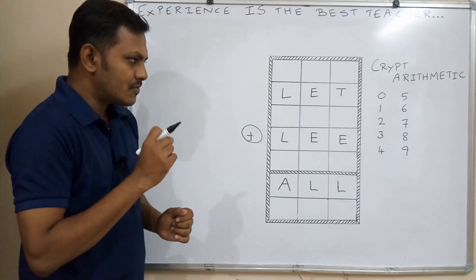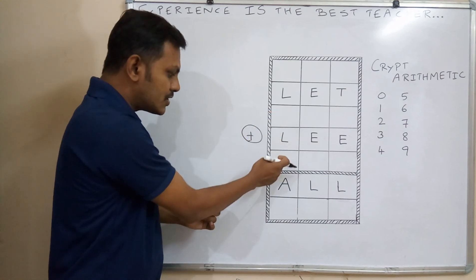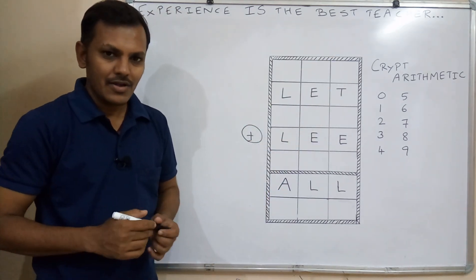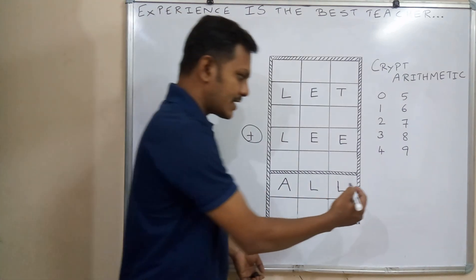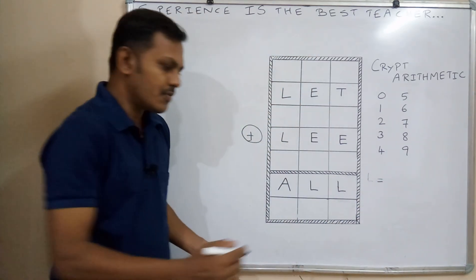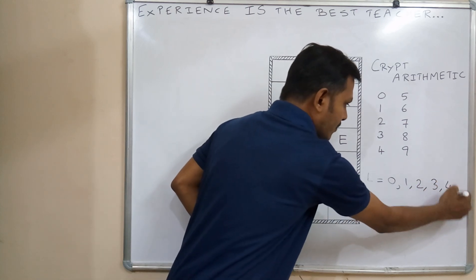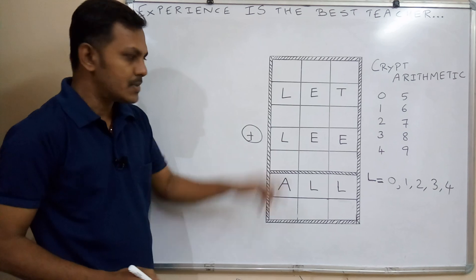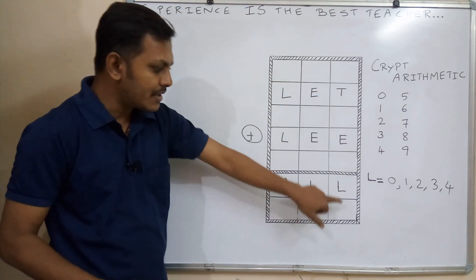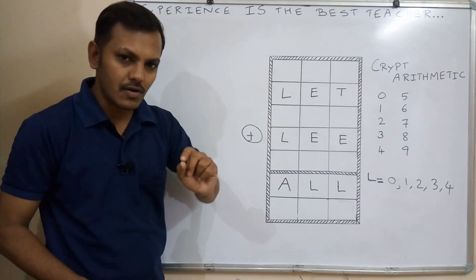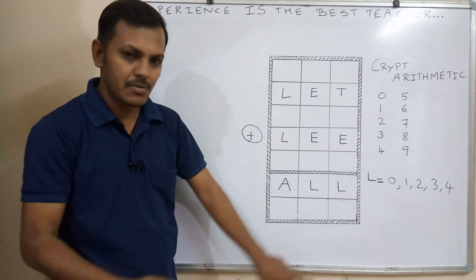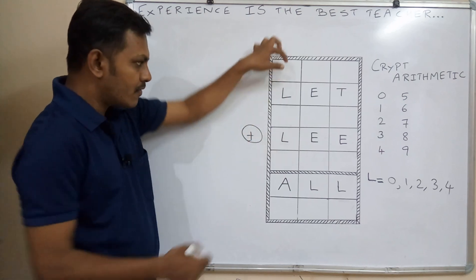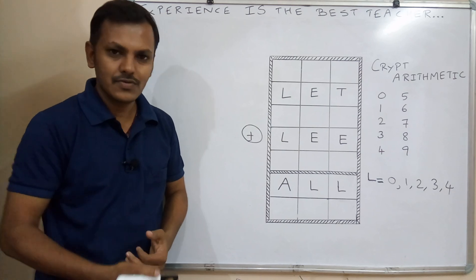We will check values 0 to 4 one by one using trial and error. Checking L equal to 0: 0 plus 0 equals 0, which is without carry over. A carry over means a previous column produced a 2-digit number, so you write a 1. The carry over is always 1, because adding two digits gives a maximum of 19. When L equals 0 without carry over, 0 plus 0 gives 0 — this does not satisfy the rule, so it is not possible.